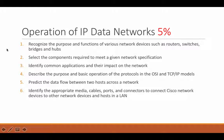You need to select the components required to meet a given network specification. We're going to go through an example specification — from that, you need to write a list of everything you're going to need to complete the task. It's only mimicking what would happen in a real-world scenario if you're an assistant administrator and your boss or somebody in the company said they need a network. You need to ask questions, they need to give you a spec, and that's what we're going to go through. You also need to describe the purpose and basic operation of protocols in the OSI and TCP/IP models.